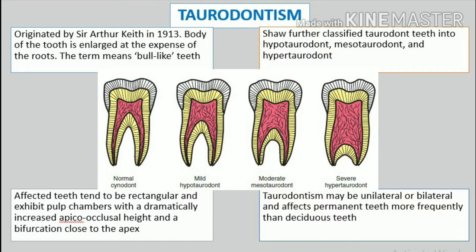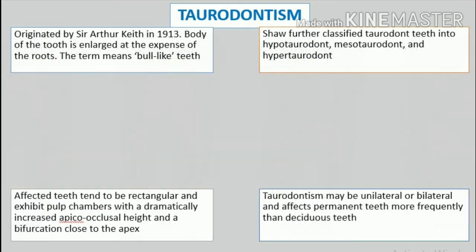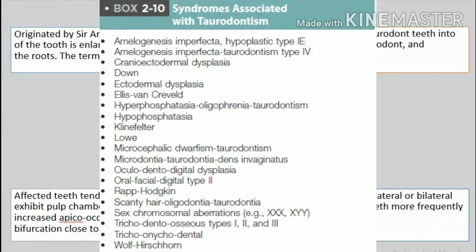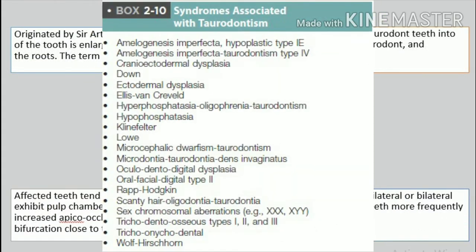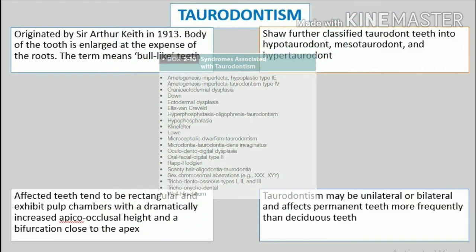The bifurcation or trifurcation may be only a few millimeters above the apices of the roots. The various syndromes associated with taurodontism are given in the picture. Treatment: No special treatment is necessary for this anomaly.